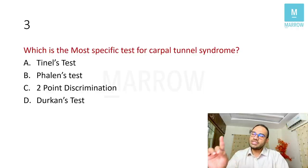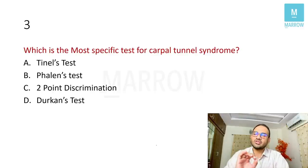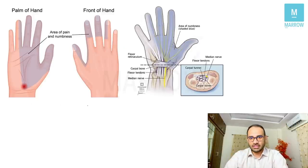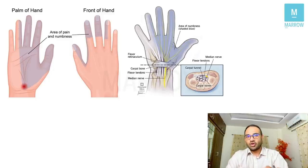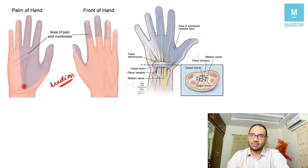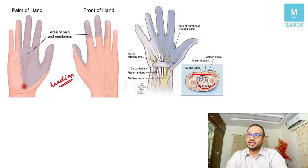Coming to the third question: which is the most specific test for carpal tunnel syndrome? The options are Tinel's test, Phalen's test, two-point discrimination, or Durkan's test. Carpal tunnel syndrome is entrapment neuropathy of the median nerve, which gets entrapped between the carpal bones, the transverse carpal ligament, and flexor retinaculum.